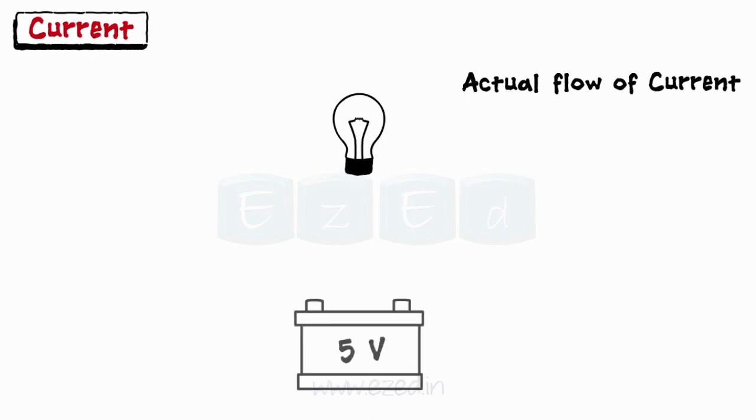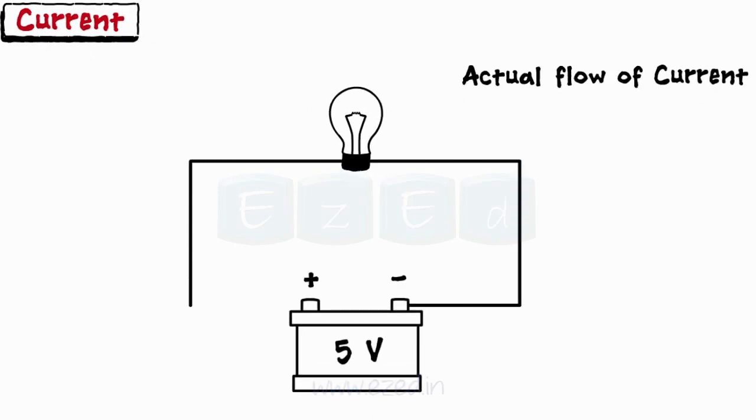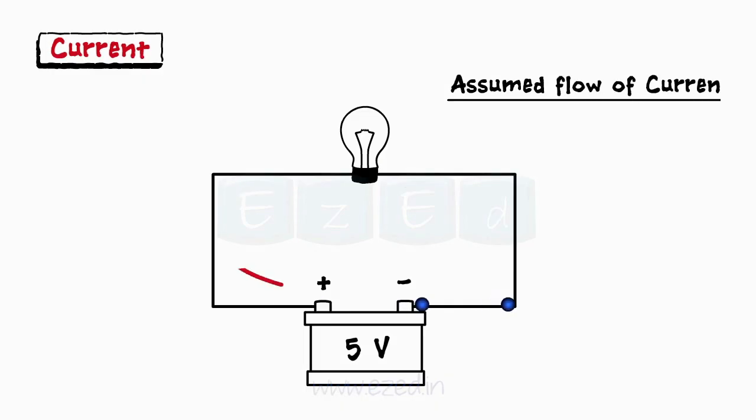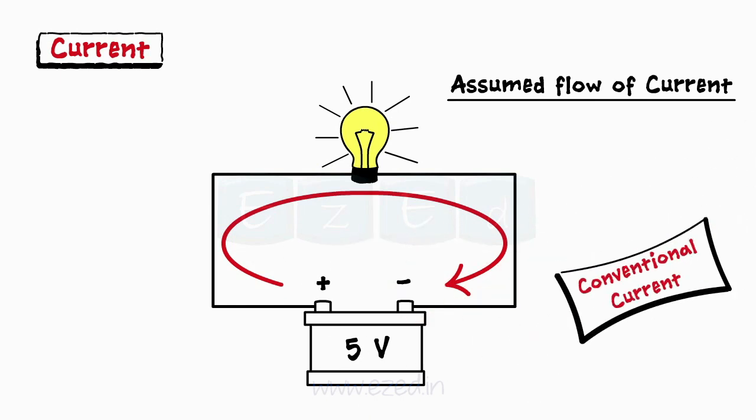The actual flow of current is same as that of the electrons from the negative to the positive terminal of the battery. But prior to the electronic theory, it was assumed that the current flows in the direction opposite to the flow of electrons, that is, from the positive to the negative terminal of battery. And it is termed as the conventional current. Till date, we follow this concept. The unit of current is amperes.